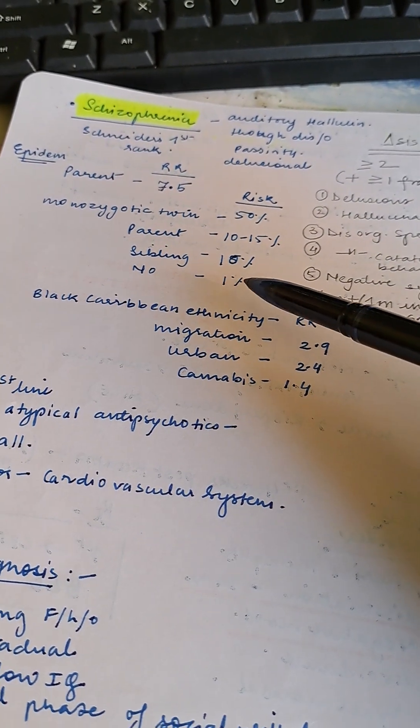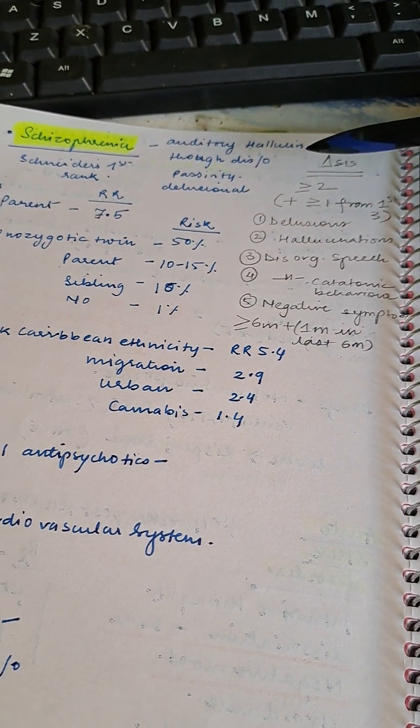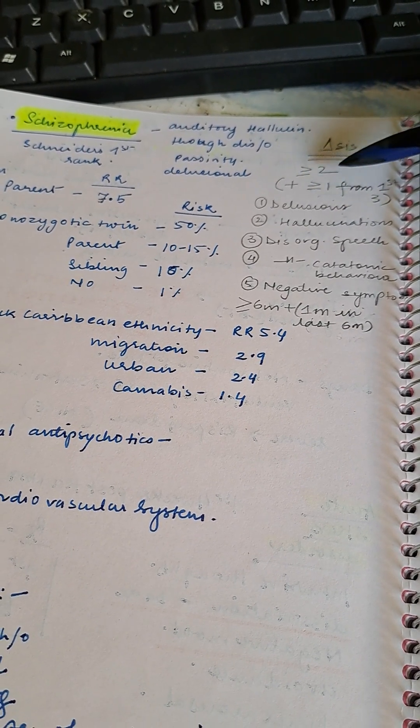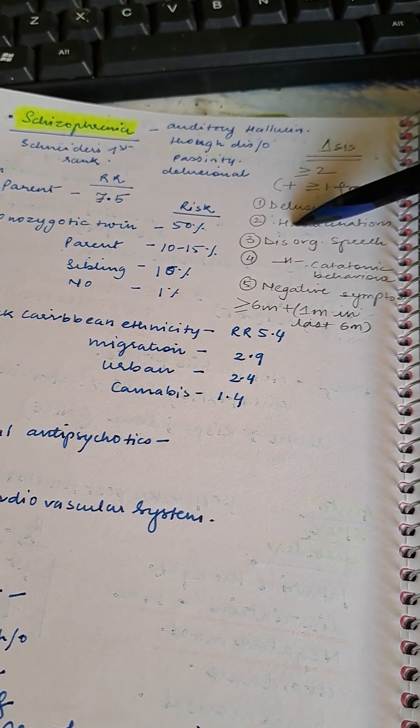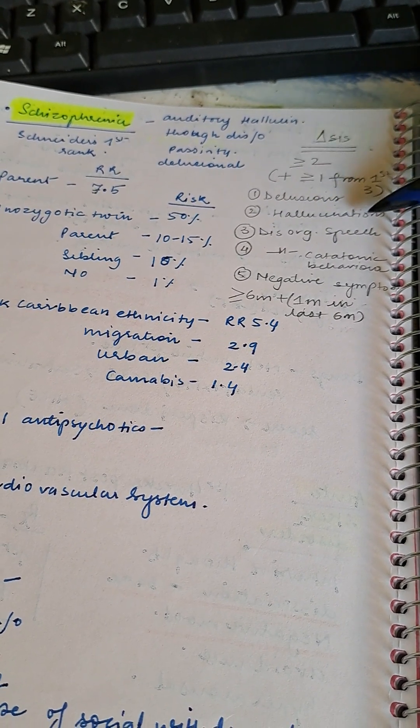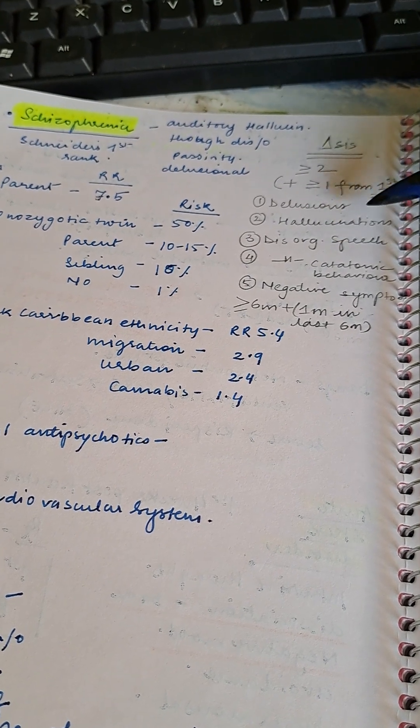How to diagnose schizophrenia: if you have more than or equal to two symptoms, and one should be from these three - delusions, hallucinations, or disorganized speech. There has to be one out of these three.